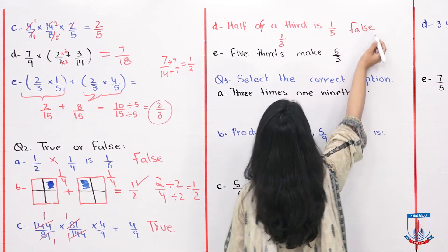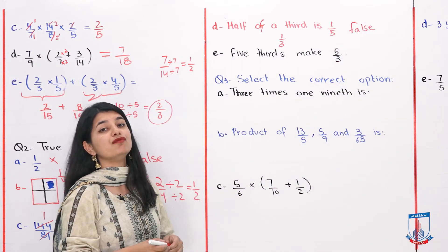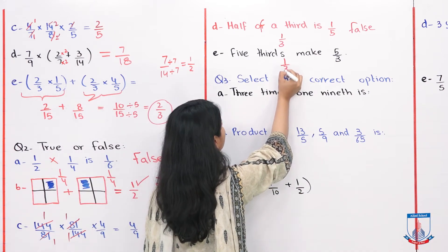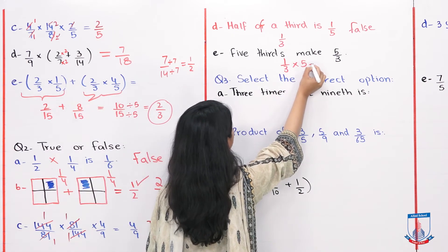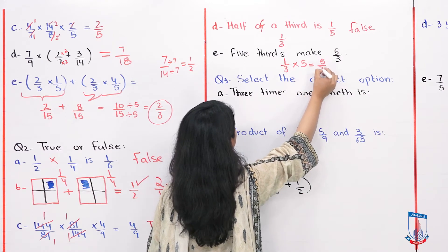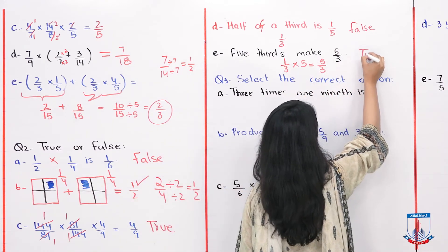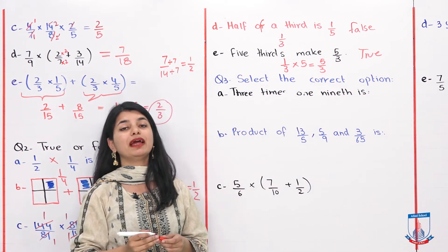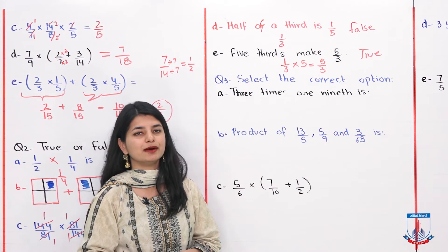The next statement says 5 thirds makes 5 over 3. One third is 1 by 3, and five thirds means multiplied by 5. So 1 into 5 is 5 over 3. This statement is true. If you multiply 1 third by 5, your answer is 5 over 3.